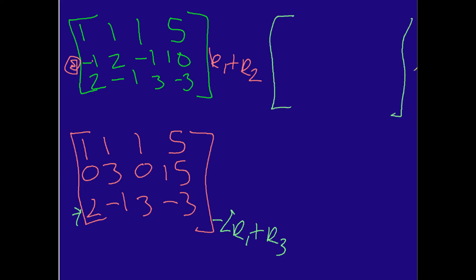So I'm going to do that right over here. And so the top row is going to be the same: 1, 1, 1, 5. Nothing's changed. Same thing with the second row: 0, 3, 0, 15. Now here comes the new stuff for row number 3. So negative 2 times 1 is negative 2 plus 2 is going to be 0. Negative 2 times 1 is negative 2, negative 2 plus negative 1 is going to be negative 3. Negative 2 times 1 is negative 2, negative 2 plus positive 3 is going to be 1. And then negative 2 times 5 is negative 10, negative 10 plus negative 3 is going to be negative 13. That's what we have now.